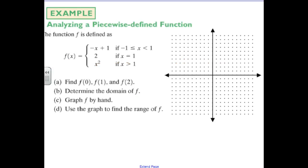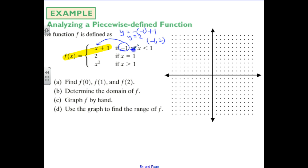Graphing a piecewise function: take the endpoint value negative one and find where the linear piece starts. Plugging in negative one gives y equals the opposite of negative one plus one, which is one plus one equals two. So I have a start value at negative one comma two, with a closed dot because of the 'equal to' condition. I'll plot that closed dot, then plug in positive one for the open endpoint: negative one plus one equals zero, giving an open dot at one comma zero. Drawing in that line segment gives me the first piece of the function.